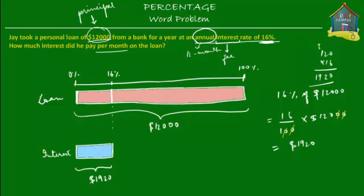What we have to find out is how much interest he paid per month on the loan. One year has 12 months, so all we have to do is divide this entire annual interest into 12 installments, because there are 12 months in a year. So we divide this into 12 parts. What we have to find out is what each of these parts is equal to. We know that $1,920 is how much he has to pay over a period of one year, so per month he'll have to pay $1,920 divided by 12.